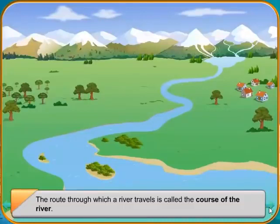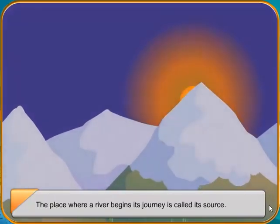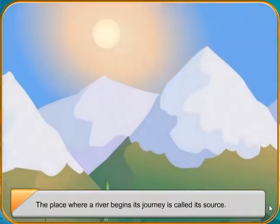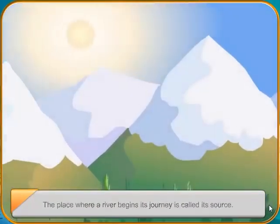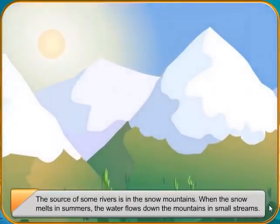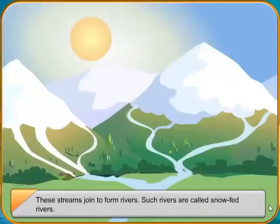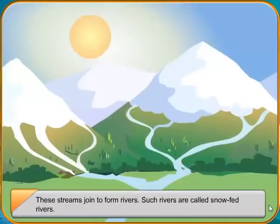The place where a river begins its journey is called its source. The source of some rivers is in the snow mountains. When the snow melts in summers, the water flows down the mountains in small streams. These streams join to form rivers. Such rivers are called snow-fed rivers.